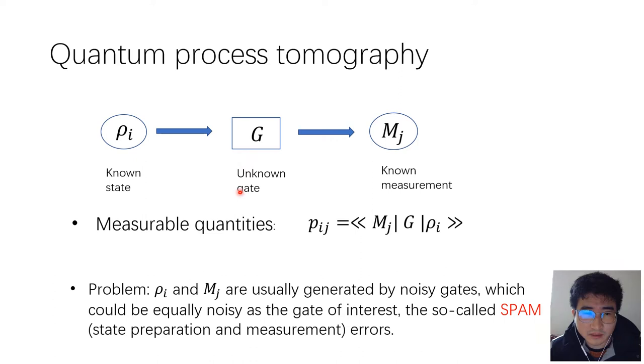We run these circuits and measure the probabilities of outcomes. We can construct a set of linear equations. With linear inversion method or optimization algorithm, we can get an estimator of the gate.